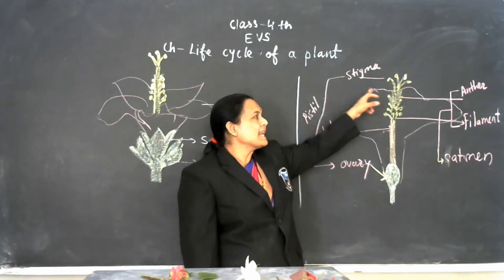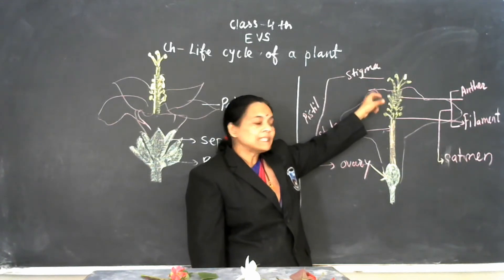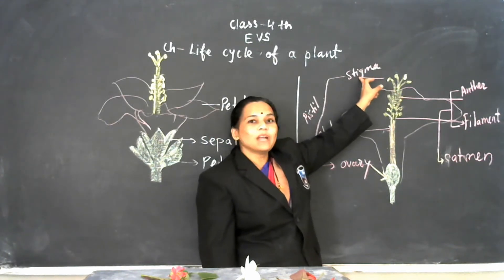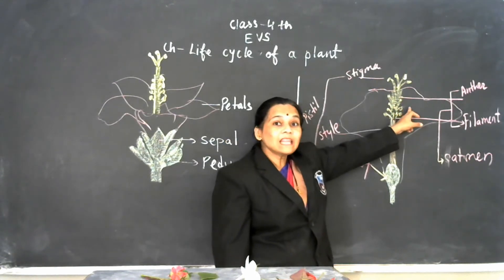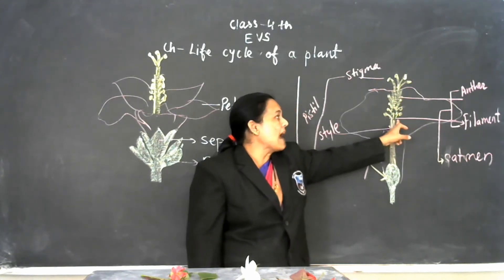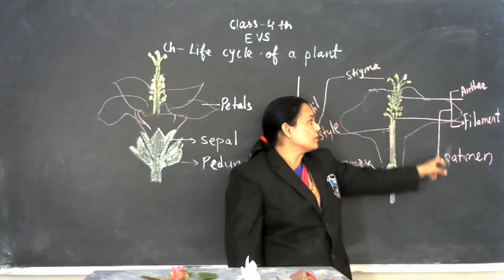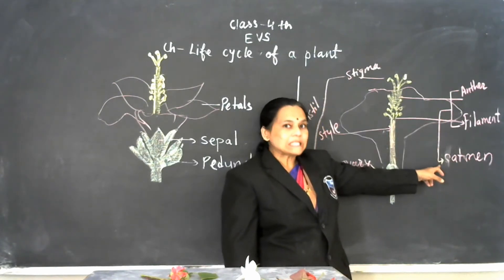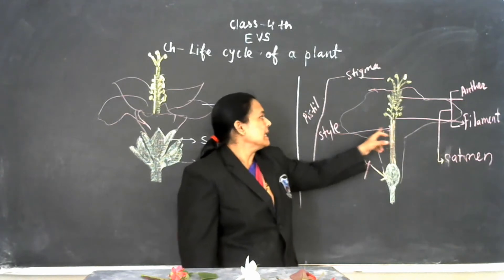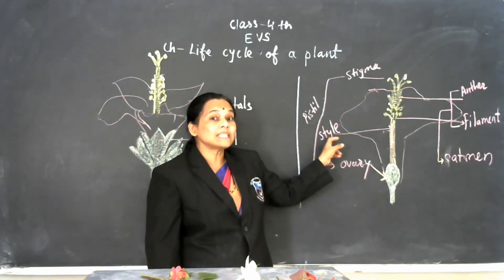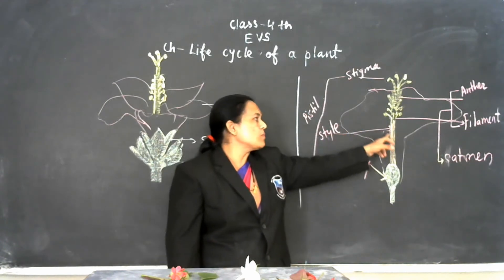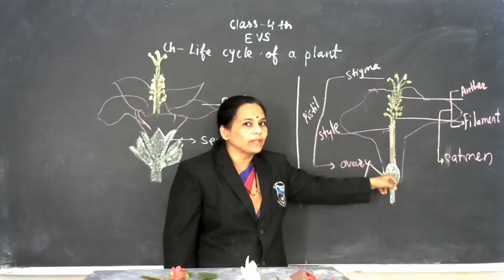But in diagram, we are again explaining these. Here, this is known as stigma. And these are anthers, anther and filaments. Both are known as stamen. This long tubular structure is known as style, and this tubular structure ends in an ovary.